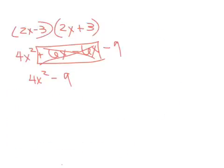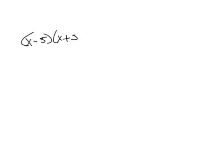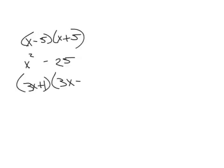Let's try one: x minus 5 times x plus 5. Square the first term to get x squared, square the last term to get 25, put a minus there and you're done. Another one: 3x plus 1 times 3x minus 1. It doesn't matter if the plus comes first or the minus — square the first term, square the second term, put a minus, and you're done.